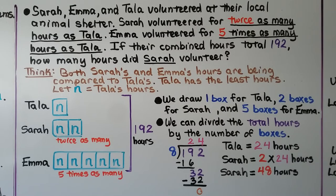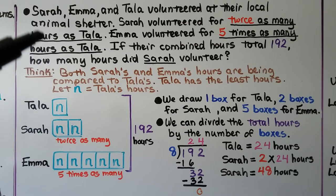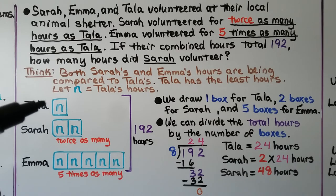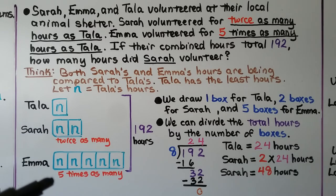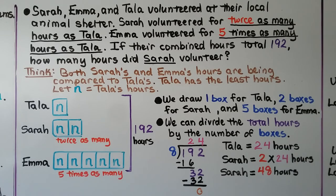Sarah, Emma, and Tala volunteered at their local animal shelter. Sarah volunteered for twice as many hours as Tala. Emma volunteered for five times as many hours as Tala. If their combined hours total 192, how many hours did Sarah volunteer? Both Sarah and Emma's hours are being compared to Tala's, and Tala has the least hours. We let N equal Tala's hours. We draw one box for Tala, two boxes for Sarah, and five boxes for Emma. We draw our bracket with 192 for the total combined hours, then divide by the number of boxes — that's eight boxes.